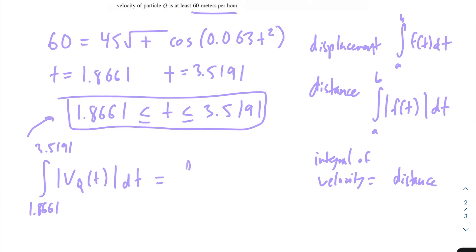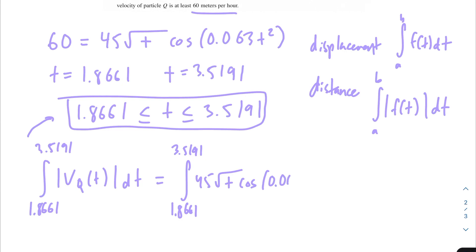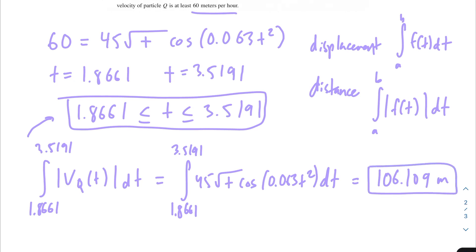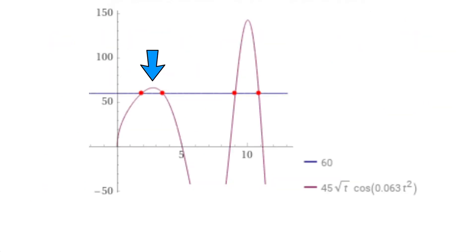So we compute the integral from 1.8661 to 3.5191 of 45 times the square root of T times cosine of 0.063 T squared dt. This gives us 106.109 meters. One note: since V of Q of T was greater than 0 the entire interval, the absolute value wasn't strictly necessary here — but always consider the difference between displacement and distance, because the velocity may be negative at some point in other problems.